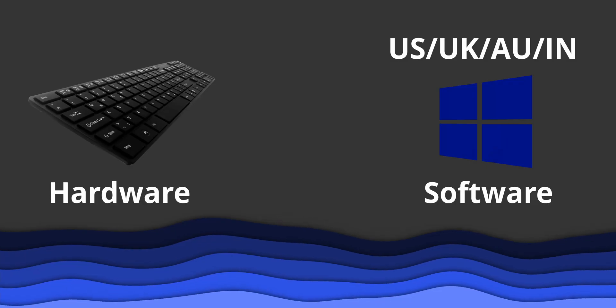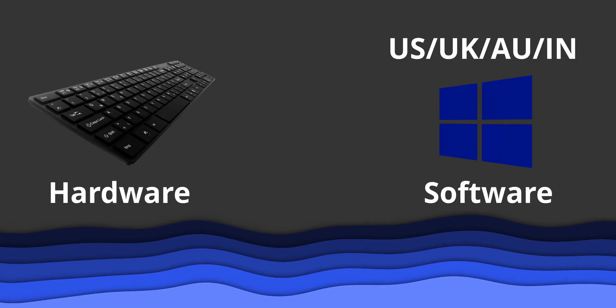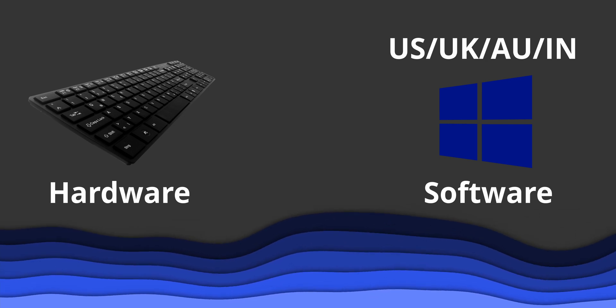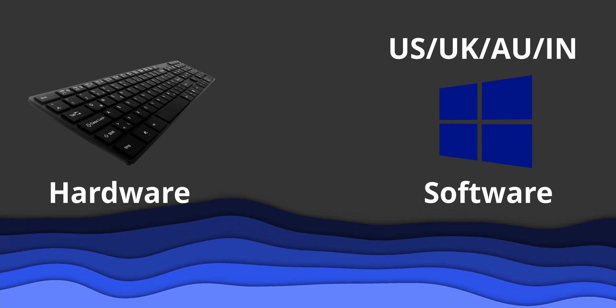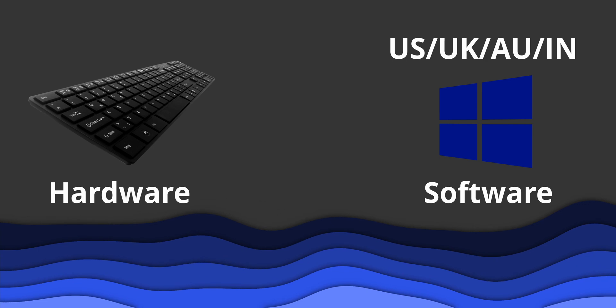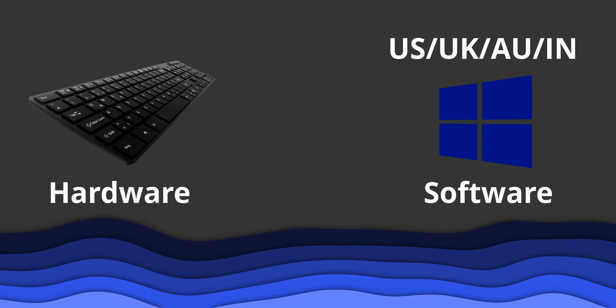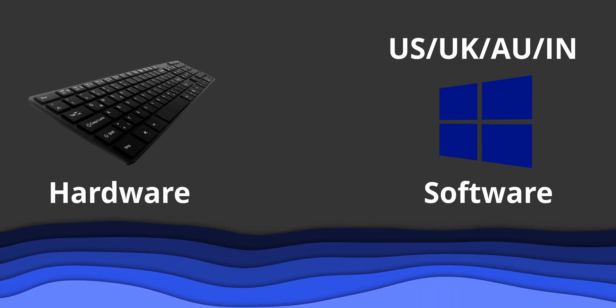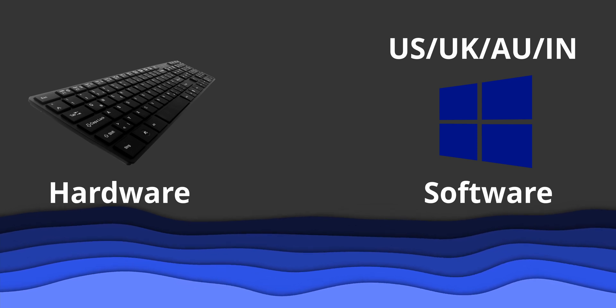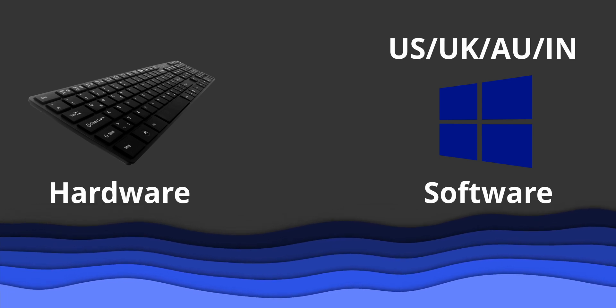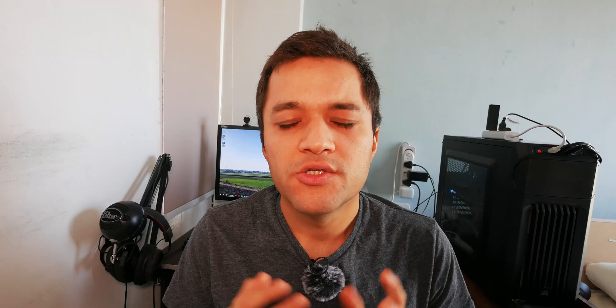There are two things: there is the hardware keyboard layout, which is the physical keys present on the keyboard, and then there is a software layout — how Windows interprets it. So you could have an American keyboard but you could type another language with it if you configure Windows to do so.